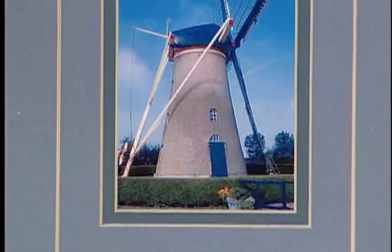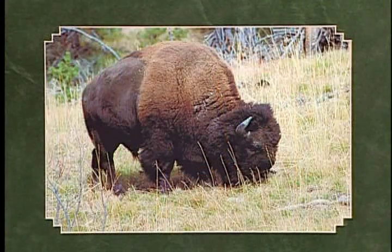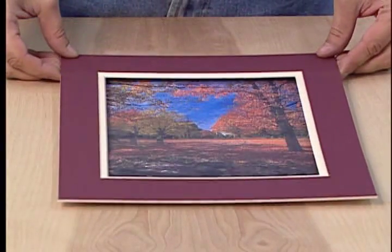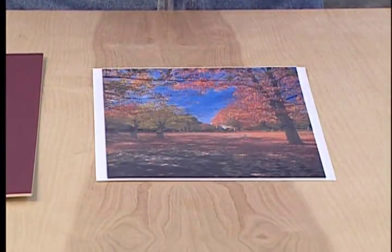There are all kinds of methods used to mount the artwork into the bevel cut mat. Here is a very common way professional framers mount artwork to ensure that it stays flat and does not become buckled or damaged over time. Commonly known as T-hinge mounting, this technique is used when the window of the artwork is slightly smaller than the artwork itself.